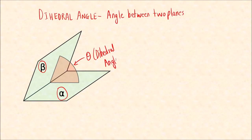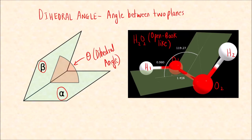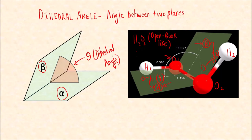Now let us understand this in terms of chemistry with the example of H₂O₂. This is H₂O₂ — hydrogen, O1, O2, and H2. It has an open-book-like 3D structure. The O-H bond O1 lies in plane A, and the other O-H bond O2 lies in another plane B. The angle between plane A and plane B, shown by the white arc, is called the dihedral angle.